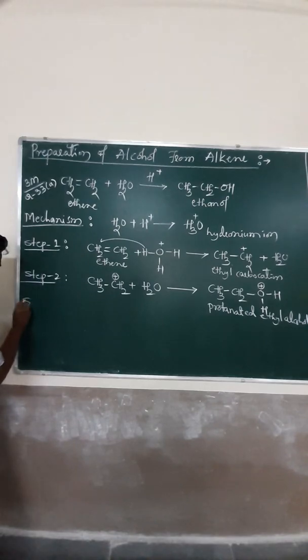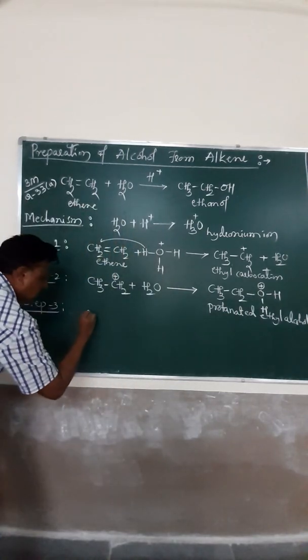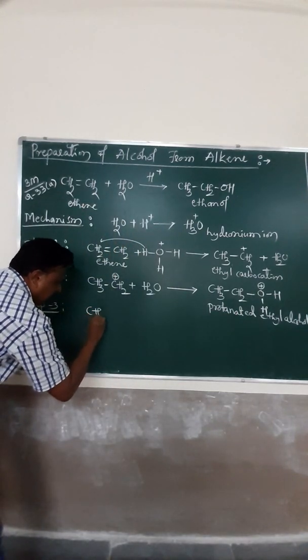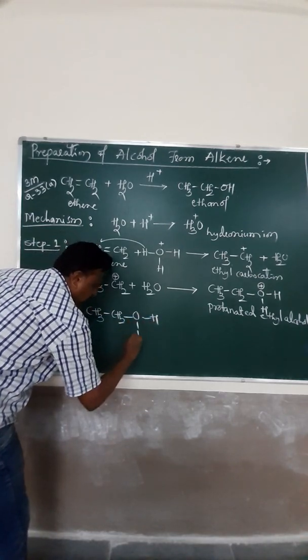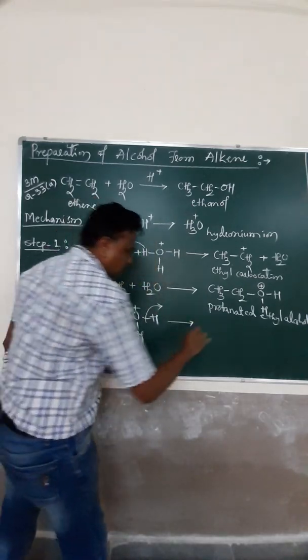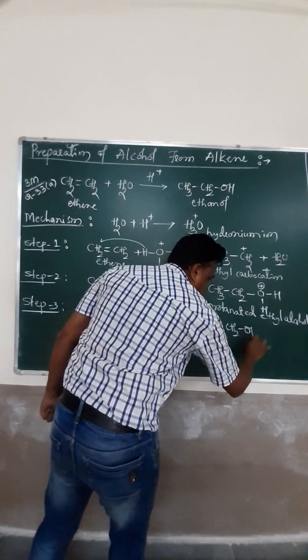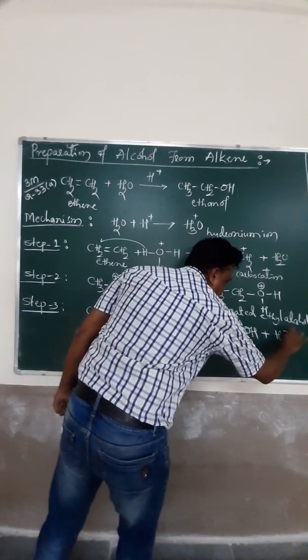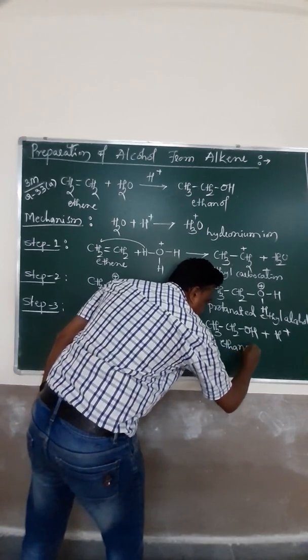In step three, step three, remove of the proton. By your protonated ethyl alcohol to remove the proton. There are H3O proteins to remove the proton. Now the formation of the compound is CH3, CH2OH, and H3O+. Now our target is finished. The name of this alcohol is ethanol.